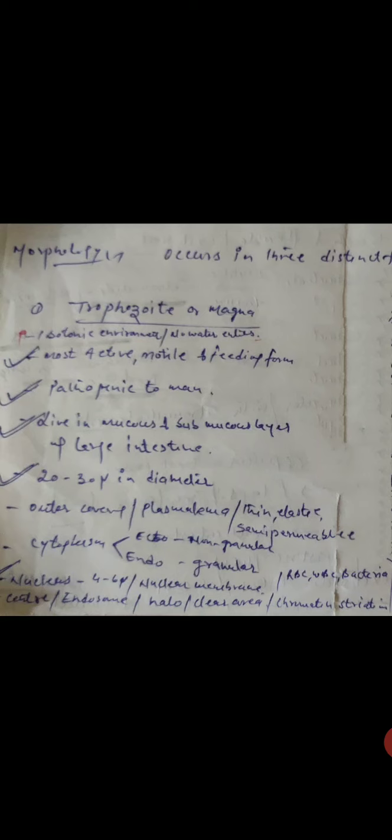The outer covering is known as plasmalemma. It is thin, elastic, and semi-permeable. Semi-permeable means it only permits selected substances through it.